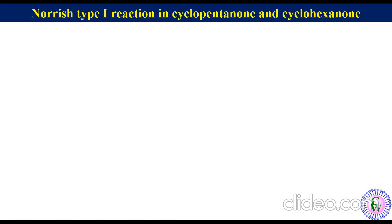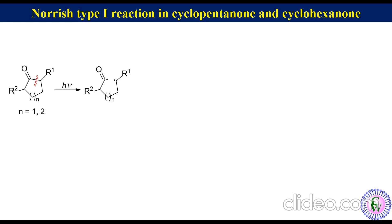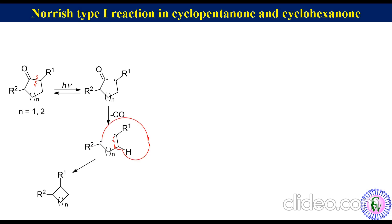Norrish Type 1 reaction in saturated 5- and 6-membered cyclic ketones: cyclopentanone and cyclohexanone derivatives undergo alpha cleavage mostly from the excited triplet state. For a hypothetical saturated cyclic ketone where n equals 1 or 2 (cyclopentanone or cyclohexanone derivative), upon irradiation it undergoes alpha cleavage to produce an acyl-alkyl diradical. It can undergo recombination to produce starting material with the same or different stereochemistry at the alpha carbon, or it can lose carbon monoxide to produce an alkyl diradical which can cyclize to produce a cyclic product or undergo intramolecular hydrogen abstraction to produce an alkene.